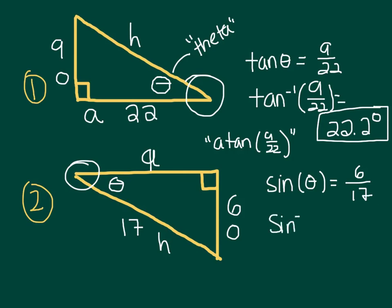So the inverse sine, or the arc sine, 6 over 17, is going to give me 20.7 degrees. Excellent. Hope you found these examples helpful.